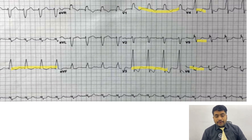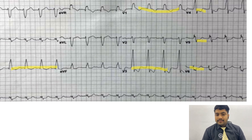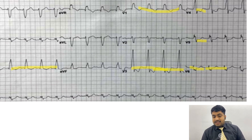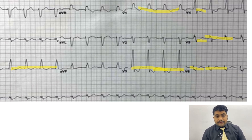An important point: T wave inversions in lead III are a normal variant. Similarly, in lead V1 there can be T wave inversions in both males and females, and in V2 it is normal for women to have T wave inversions — so they may or may not be pathological depending on the clinical history. Whenever we see this kind of ECG with ST segment depression, we refer the patient for cardiac biomarkers. If they are elevated, this is NSTEMI; otherwise, it is unstable angina.